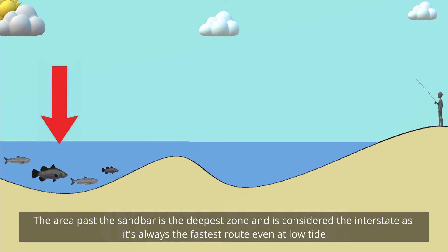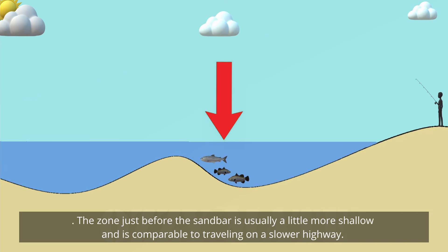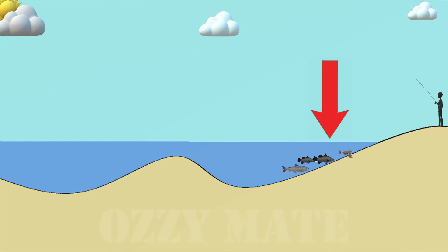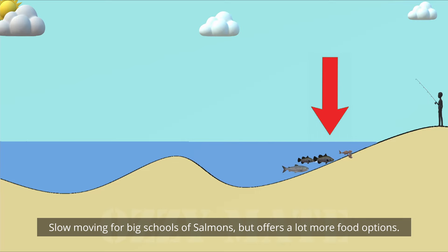The area past the sandbar is the deepest zone and is considered the interstate, as it's always the fastest route, even at low tide. The zone just before the sandbar is usually a little more shallow and is comparable to traveling on a slower highway. The zone closest to shore that offers the first little drop-off is the back roads.